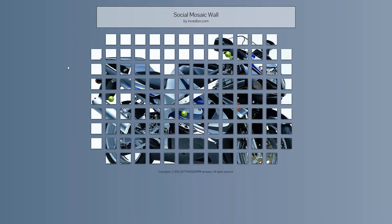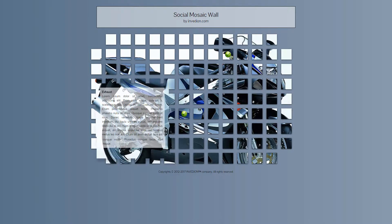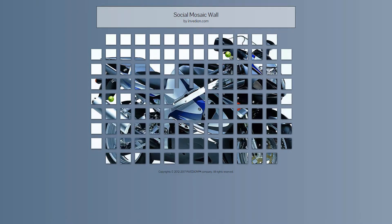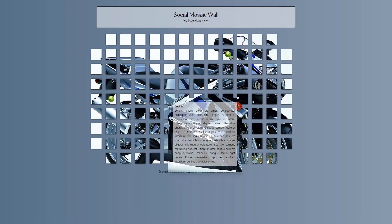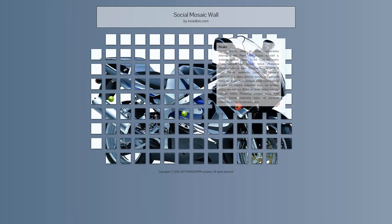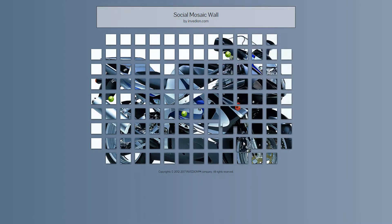Your grid can be used as an information board that could display key features of your product. As in our case: engine, exhaust, brakes, etc.